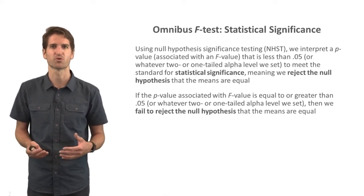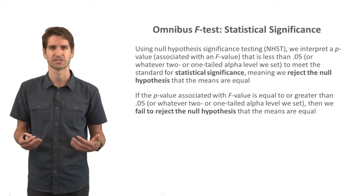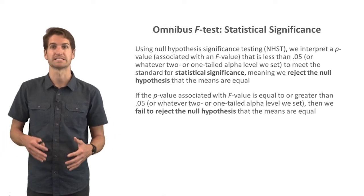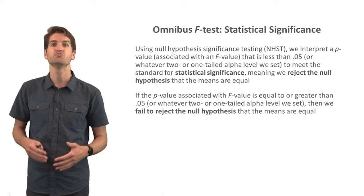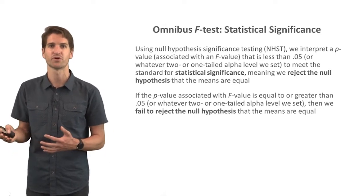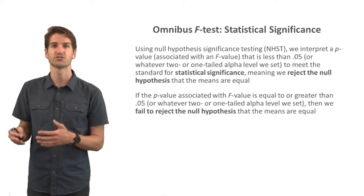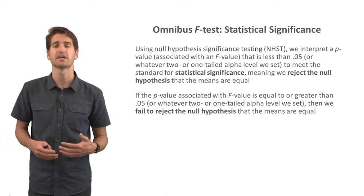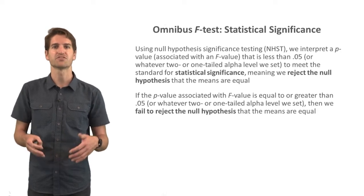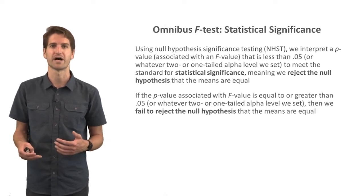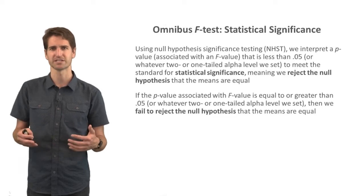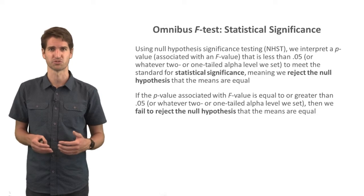Using null hypothesis significance testing, a p-value associated with the F-value that is less than 0.05 — the conventional cutoff — meets the standard for statistical significance, meaning we reject the null hypothesis that the means are equal. In other words, there are some mean differences, though we don't know exactly where they are when we have three or more means. If the p-value is equal to or greater than 0.05, we fail to reject the null hypothesis and find no evidence of differences between those means.